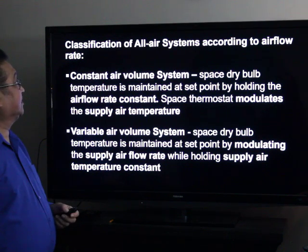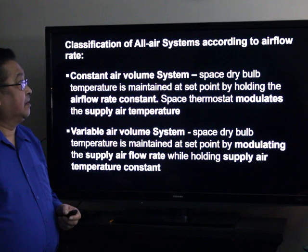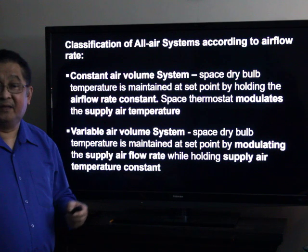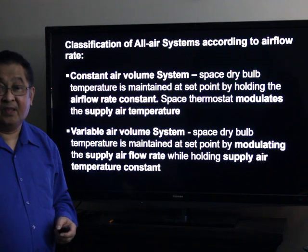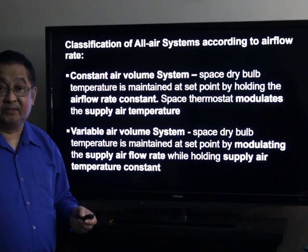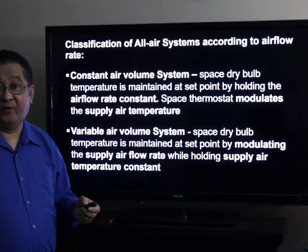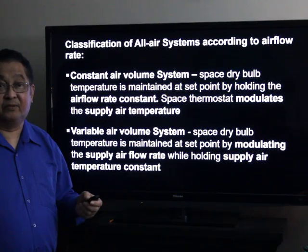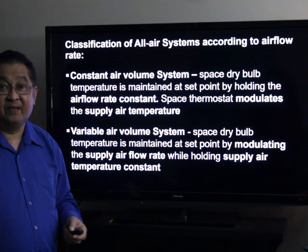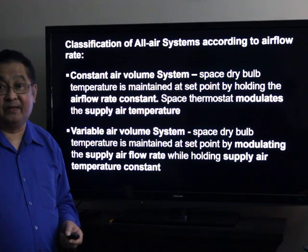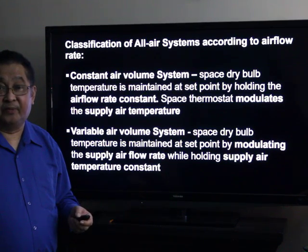There are two classifications of all air systems according to the air flow rate. The first one is the constant air volume system. And the second one is the variable air volume system. For the constant air volume system, the set point temperature of the space is maintained by holding the air flow rate constant while modulating the supply air temperature. For the variable air volume system, the set point is maintained for the space temperature by holding the supply air temperature constant and modulating the air flow rate.